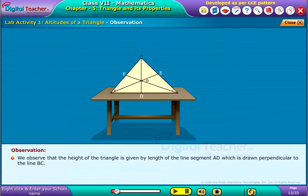We observe that the height of the triangle is given by length of the line segment AD which is drawn perpendicular to the line BC. And also, all the altitudes lie in the interior of the triangle.